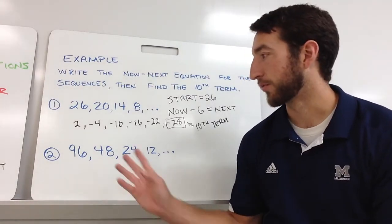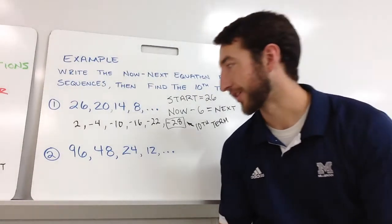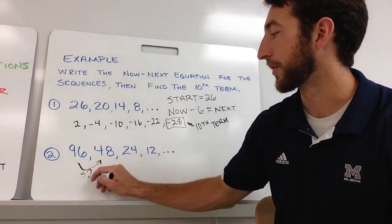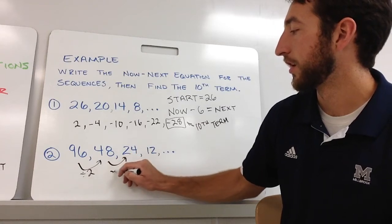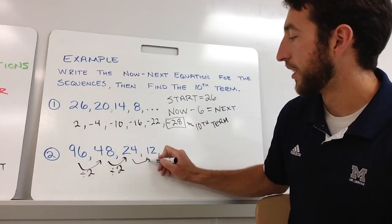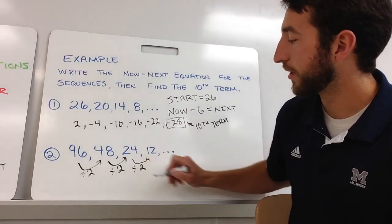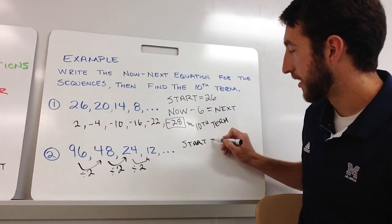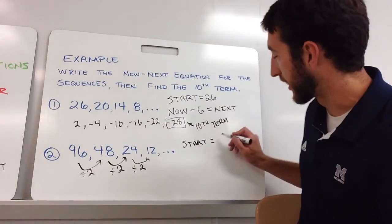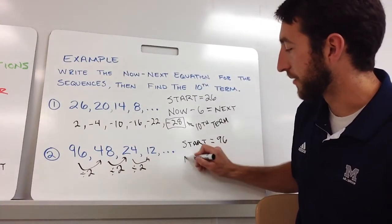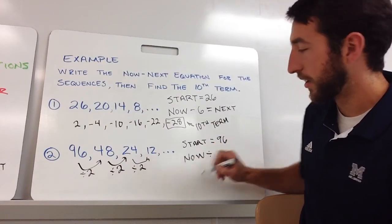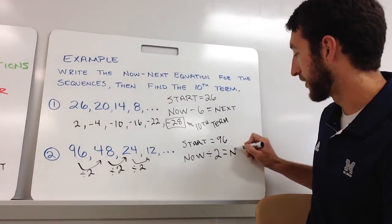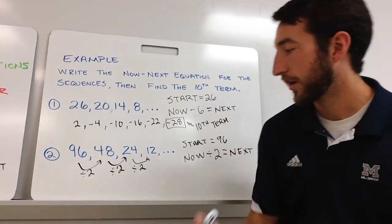And what we're going to do next after we go over this example, I'll show you how to do it in the calculator. This one looks like we're dividing by 2, dividing by 2, dividing by 2. I'm going to make sure I write my start in there: start equals 96. Taking my now, each time I divide it by 2, equals my next.